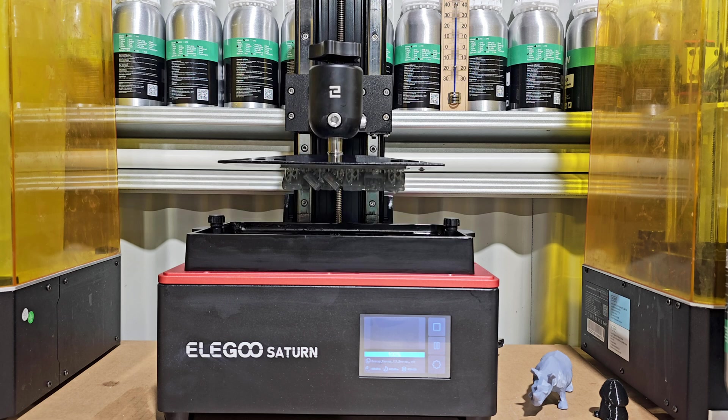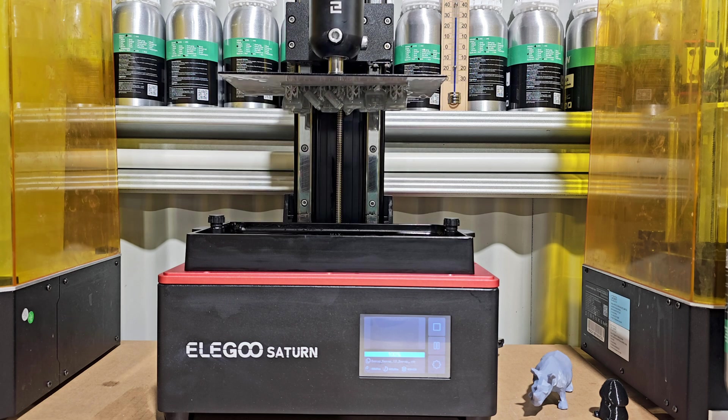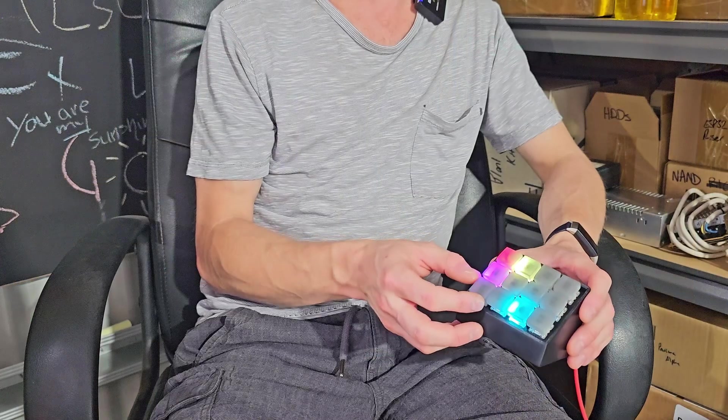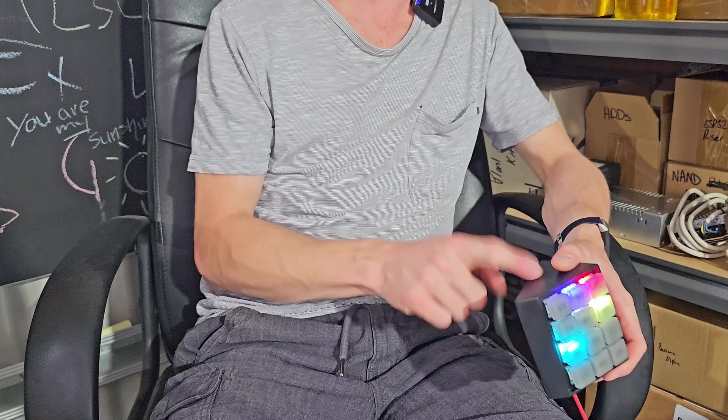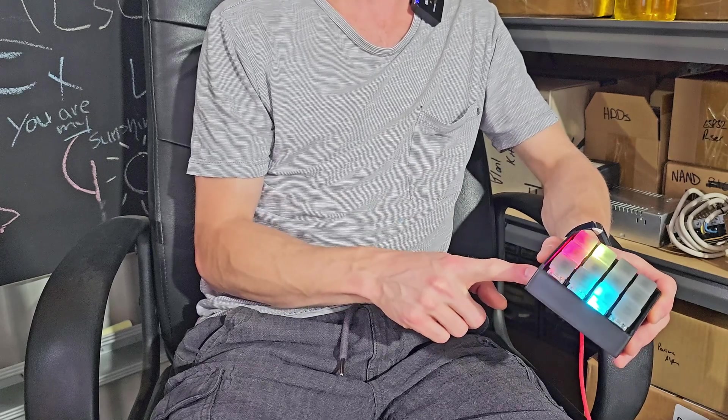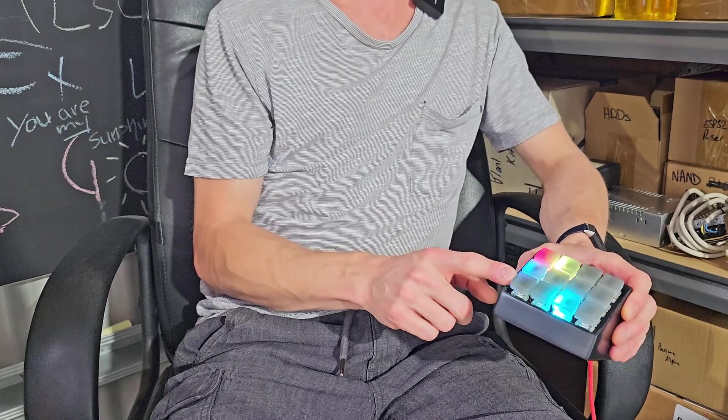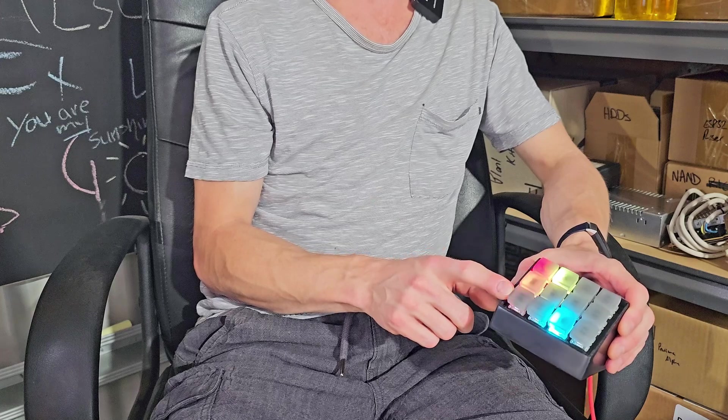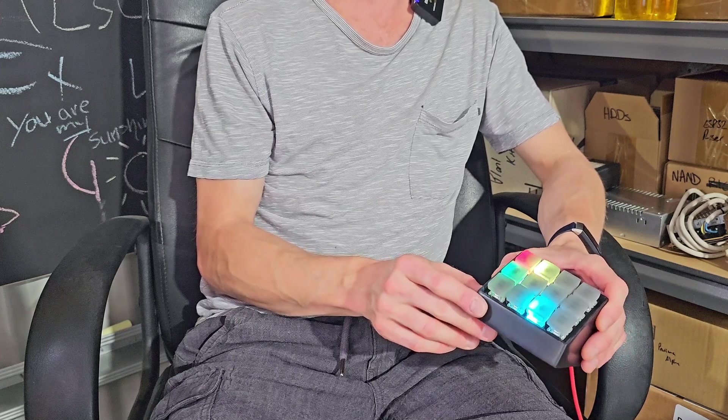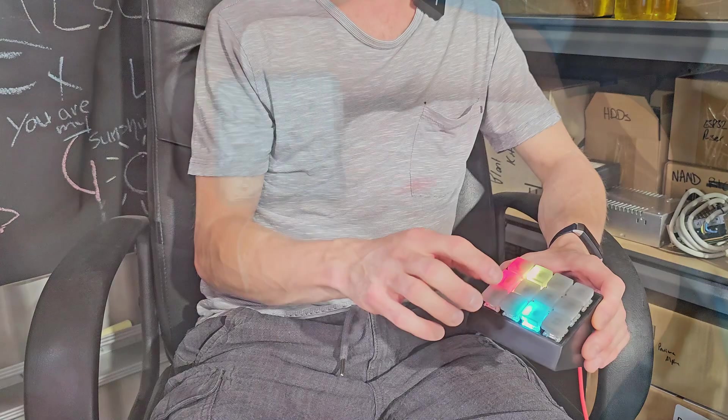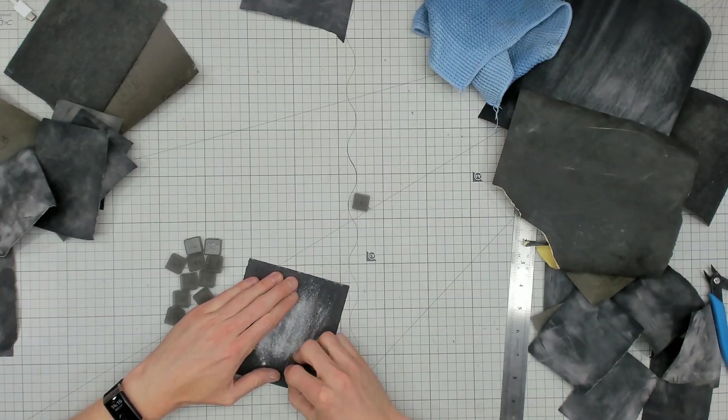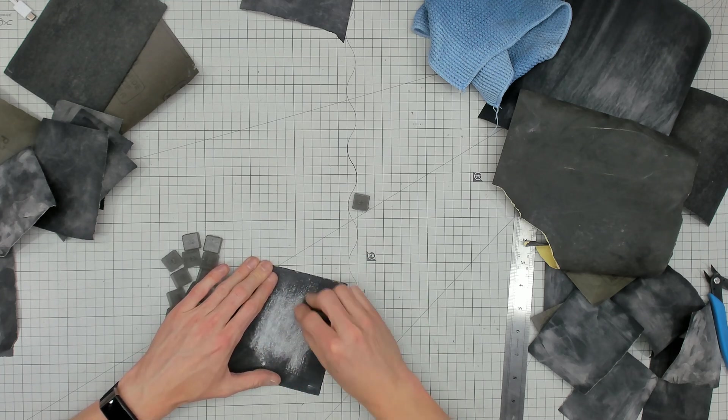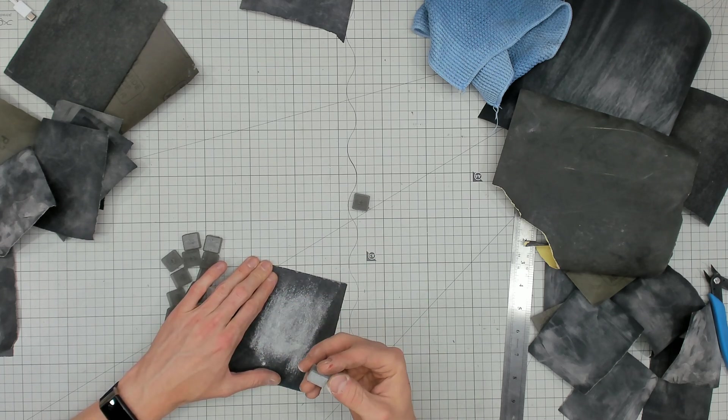And then I used the SLA or MSLA printer which was my Elegoo Saturn 4K I think it is for the keycaps because I had some transparent resin. Realistically I could have done these with FDM as well if I bought some new material like a clear PETG. I've got like 10 kilos. I could have 3D printed these with FDM but they wouldn't have looked as good and they might have been a little bit harder. So I put the supports for these on the faces and I had to sand them back anyway. And realistically that was pretty much everything. Everyone's got spare USB cables lying around and it just took some Arduino code, just stitched the rest together.